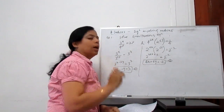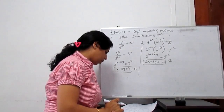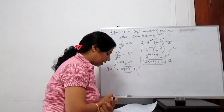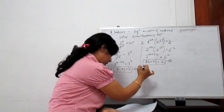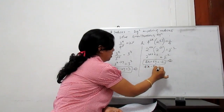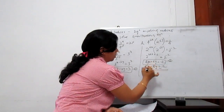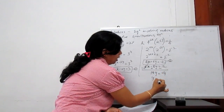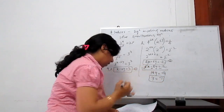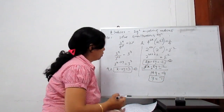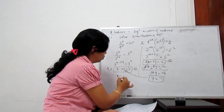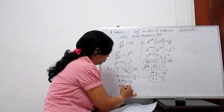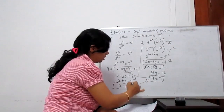Now we have two linear equations with two unknowns, which we already know how to solve. Multiply the first equation by 4 so that the 4x terms cancel. This gives 4x minus 8y equals 12. Subtracting: 8 plus 6 gives 14y equals minus 14, so y equals minus 1. Substituting y into the first equation: x minus 2 times minus 1 equals 3, so x plus 2 equals 3, giving x equals 1.